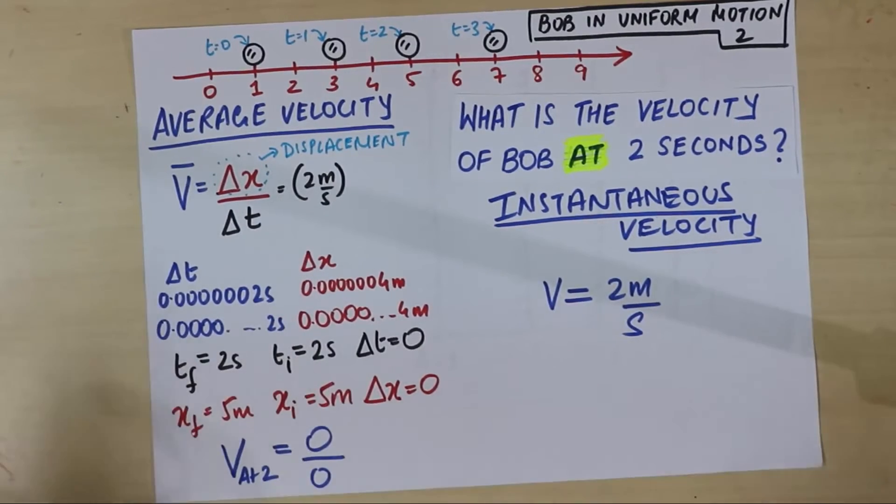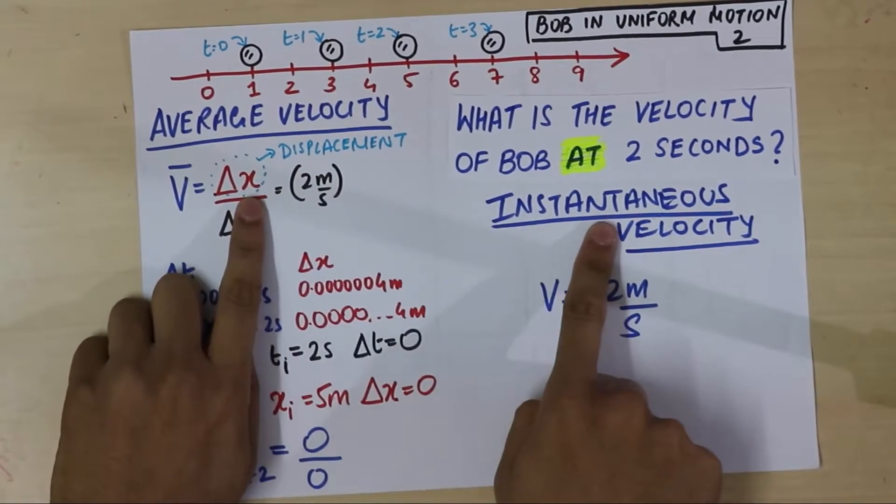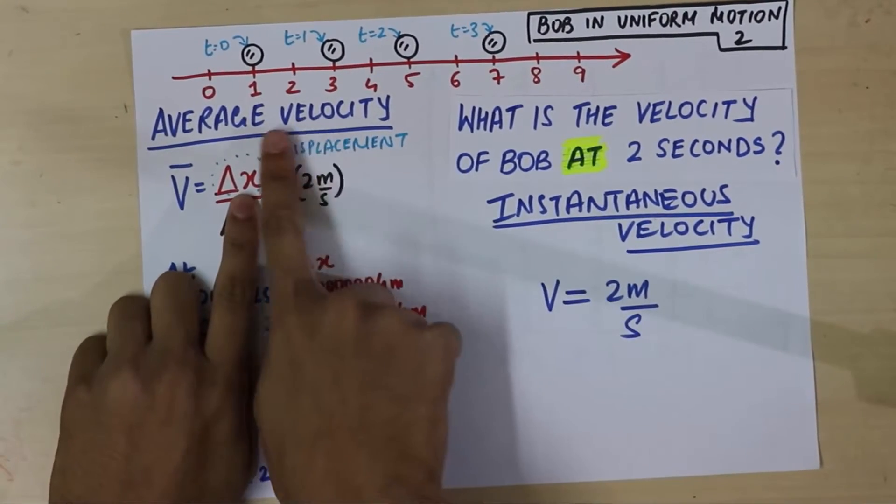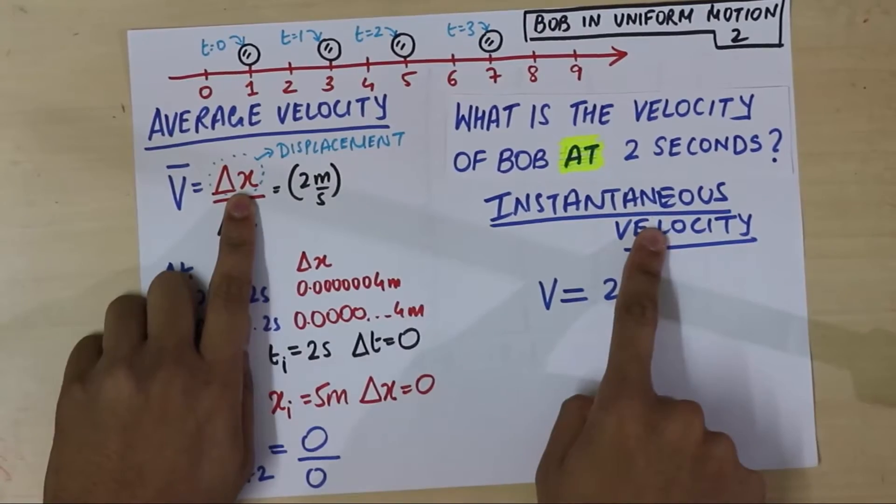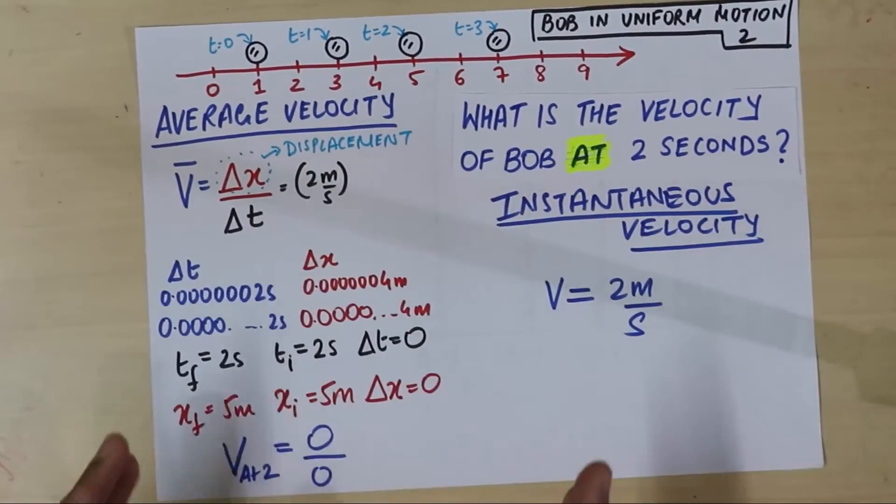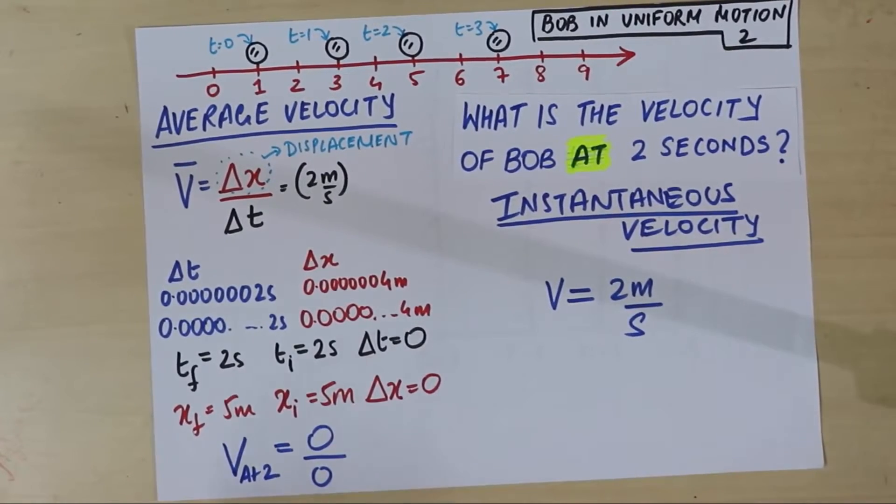So, to summarize, what we learned in this short episode was we learned that there are two kinds of velocities. Okay? There's an average velocity and there's an instantaneous velocity. Either ways, what is velocity? I haven't defined velocity for you, right? So, what is velocity?